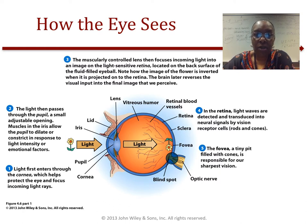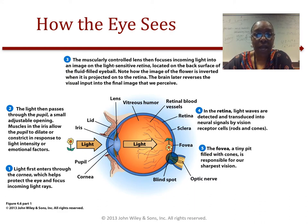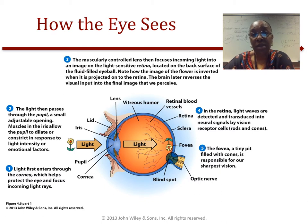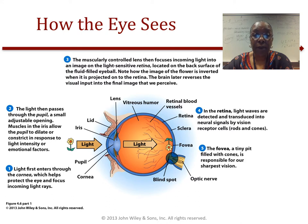Now let's talk about how the eye sees. Various structures of your eye work together to focus the light waves from the outside world. Receptor cells in your retina — the rods and cones — convert these waves into messages that are sent along the optic nerve to be interpreted by your brain.